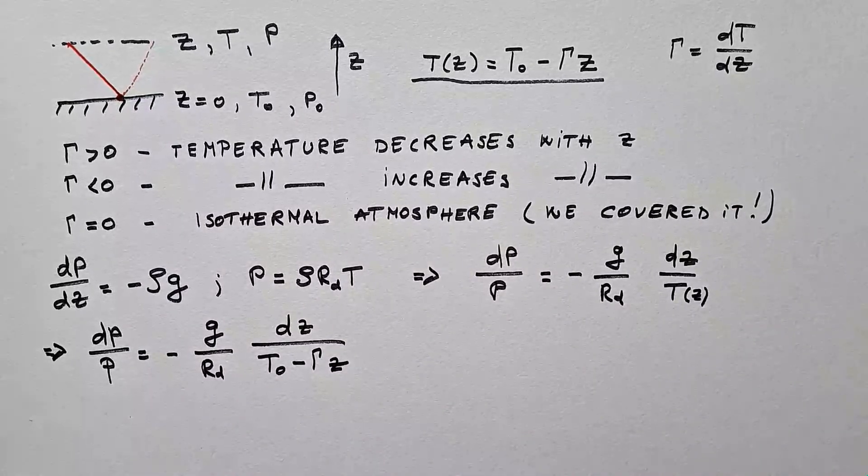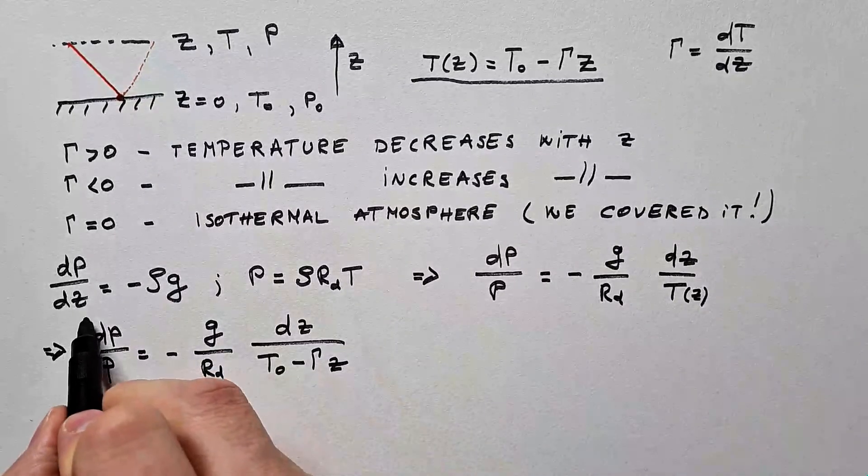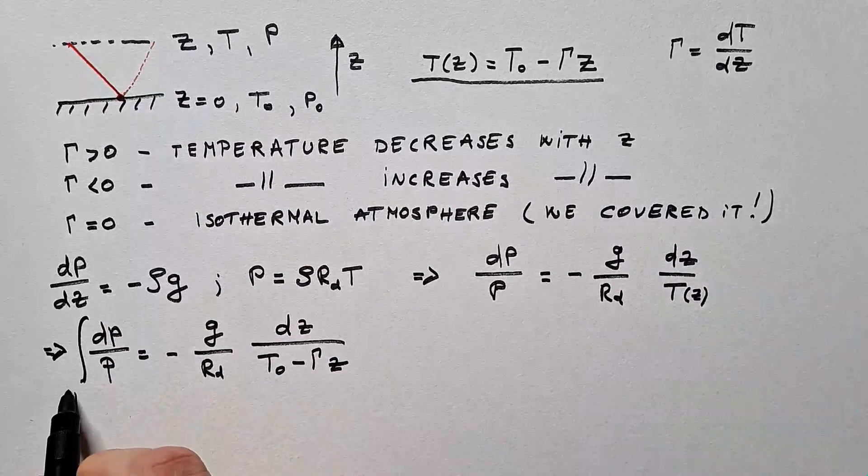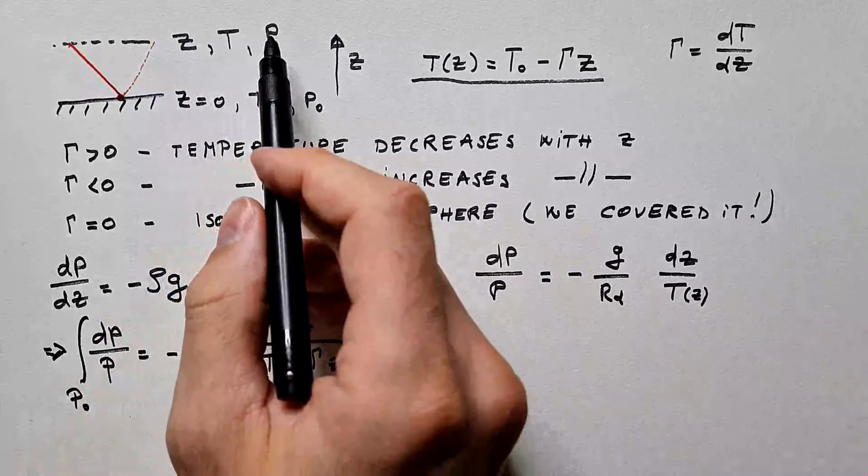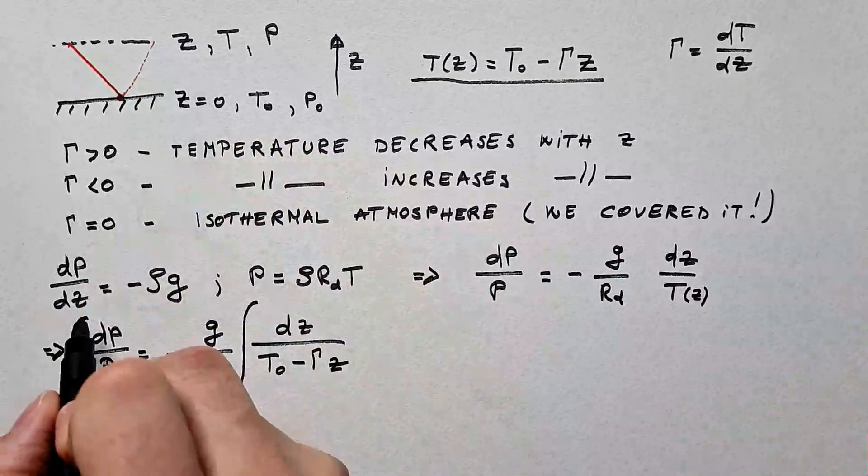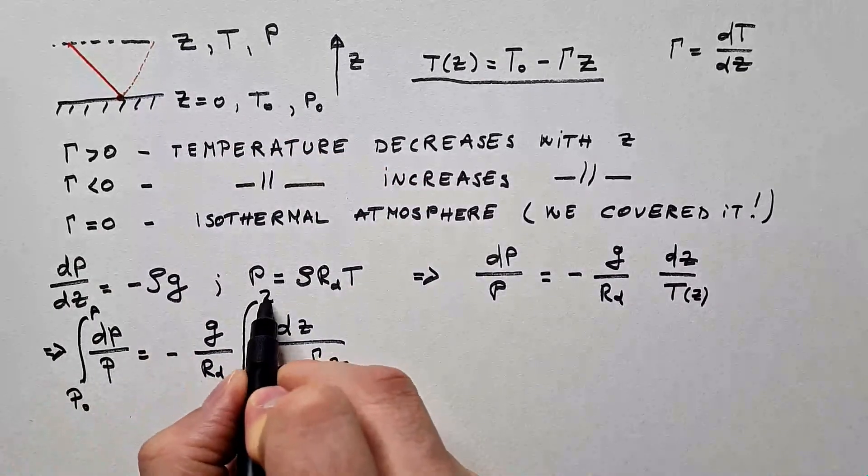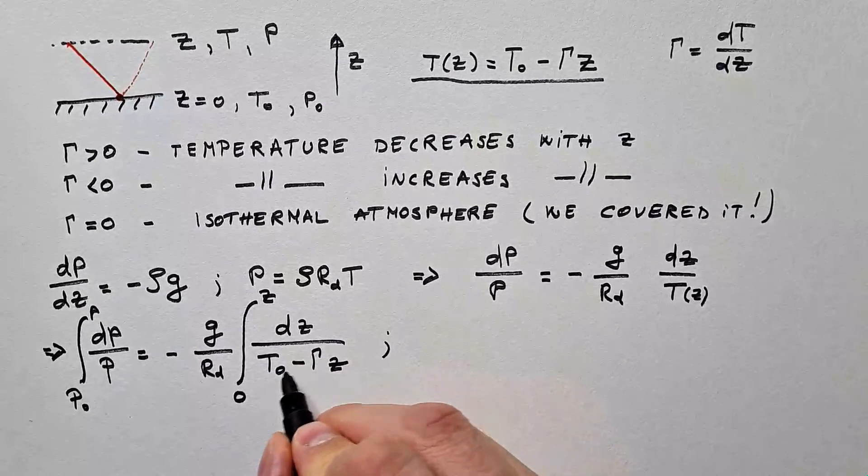We can further write dP over P is minus g over Rd dz over T₀ minus γz. And now, we need to integrate this. So, here we have pressure P₀ at the height 0 to pressure P at height z.